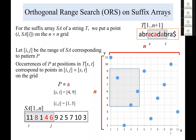For the suffix array of string t, we place the point (i, SA[i]) on an n-by-n grid. For example, SA[1] = 11, so we place (1, 11); SA[2] = 8, so we place (2, 8), and so on. Let [i, j] be the range of the suffix array corresponding to pattern p. If the pattern is 'a', then i, j is 1 to 5. The occurrences of p at positions s to t correspond to points in the rectangle [i, j] × [s, t] on the grid.